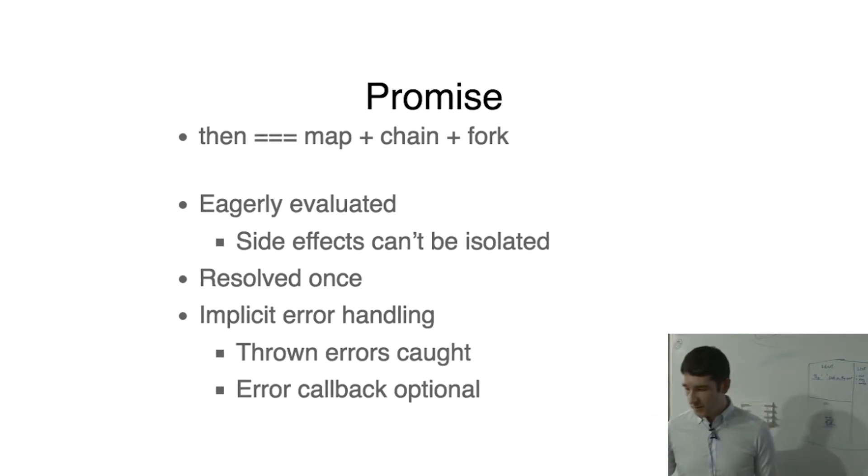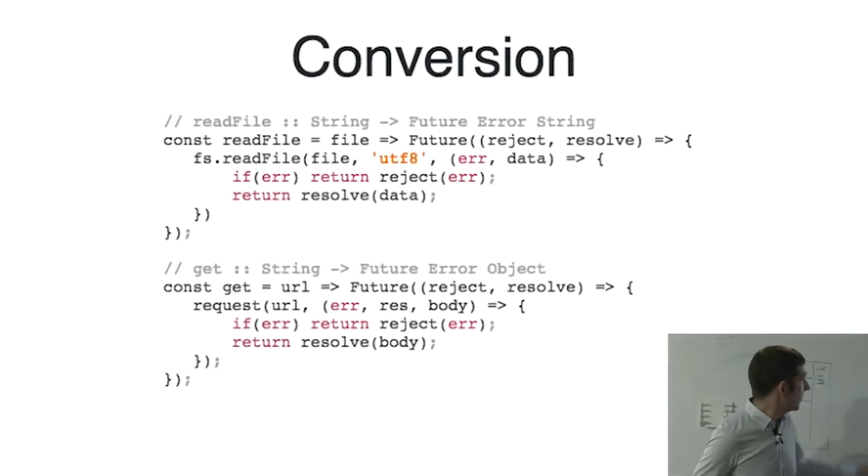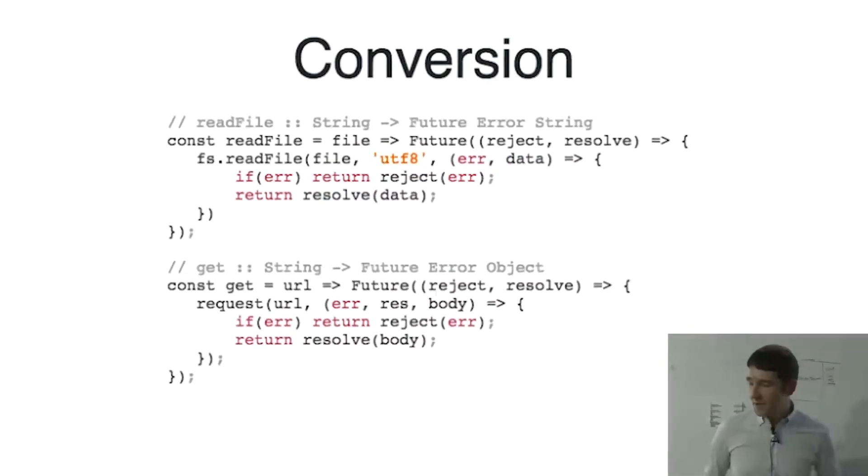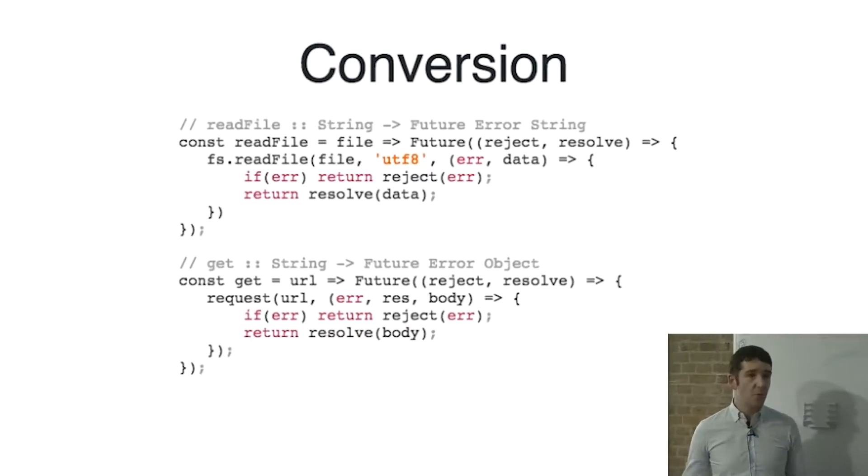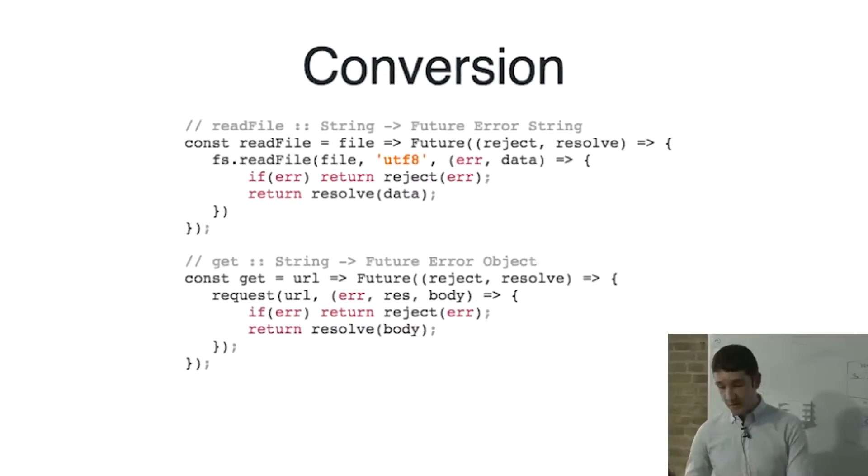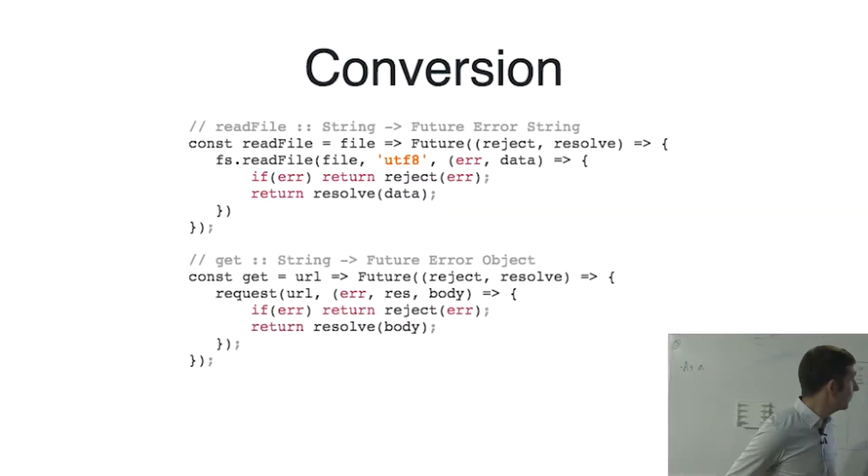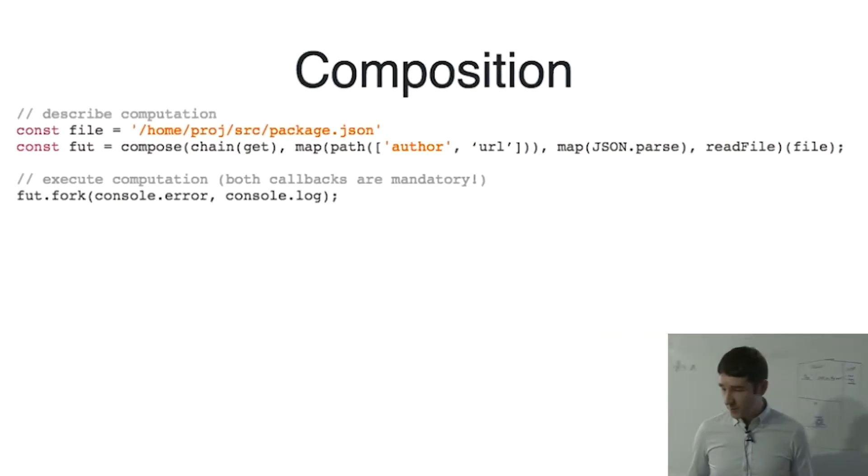So how do we use one of these? Again, if you know about promises, this looks incredibly similar. Just reading the file, or doing a HTTP request, make sure you pass in your error and your resolve callback. That's great. Say we just want to compose these. Again, if you know how to use a maybe and you know how to use an either, you can use a future. Here, we're just reading the file. We're parsing it again in a very unsafe way. And then we're trying to get a URL and we're going to make a HTTP request. But if you see, we're not actually making the request. We're just describing the computation. We're not actually doing it. It's only until we call this fork method here that we actually initiate the side effect.